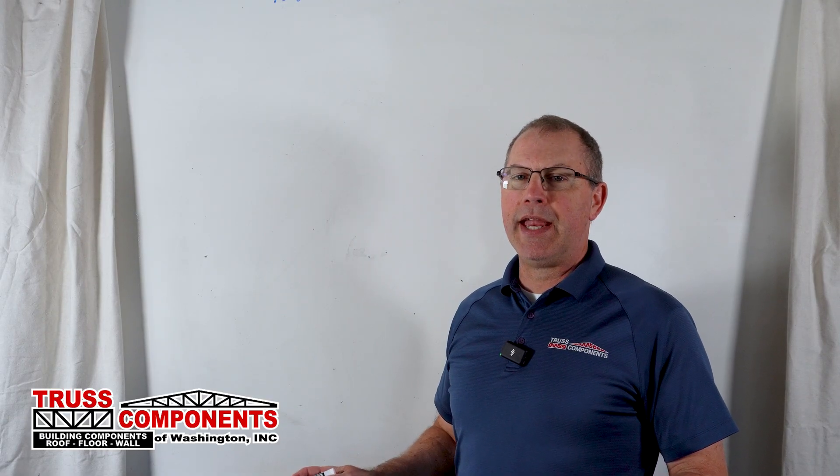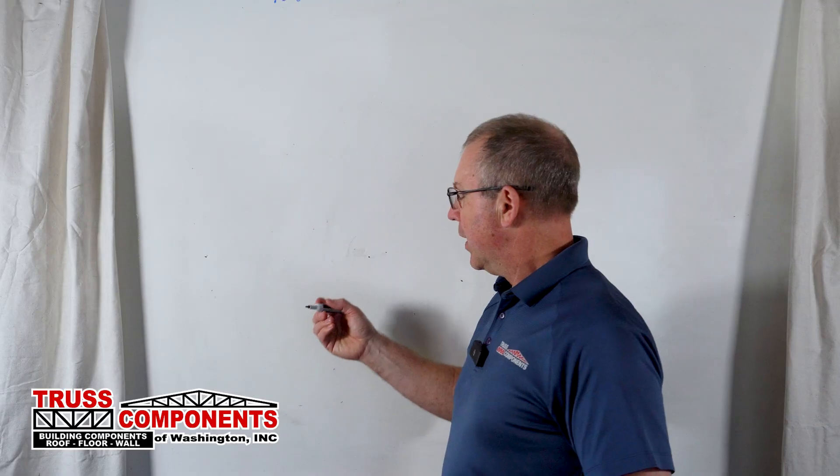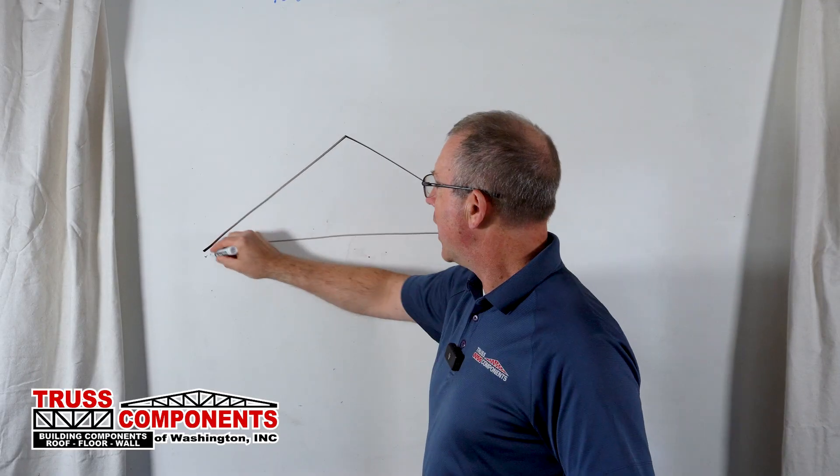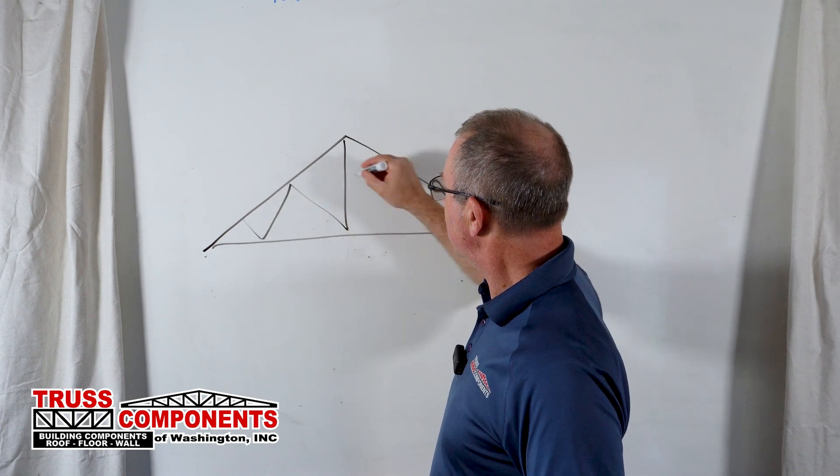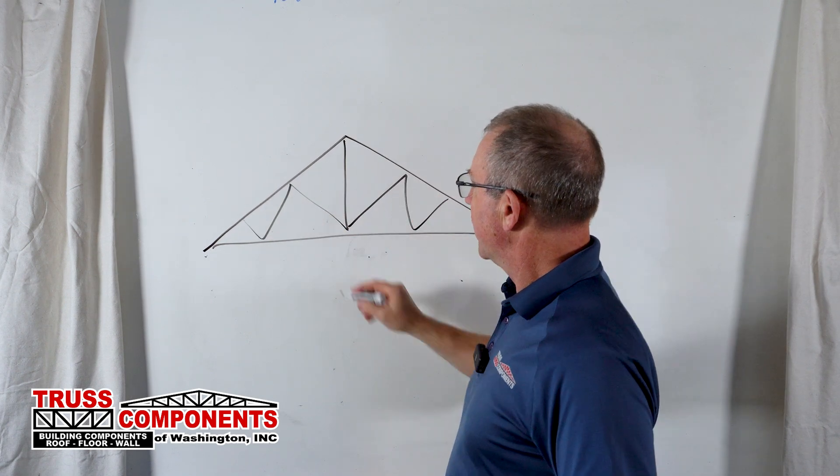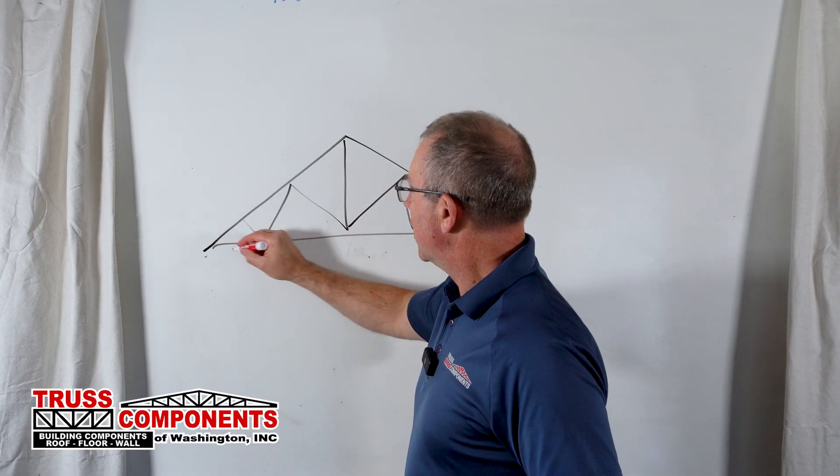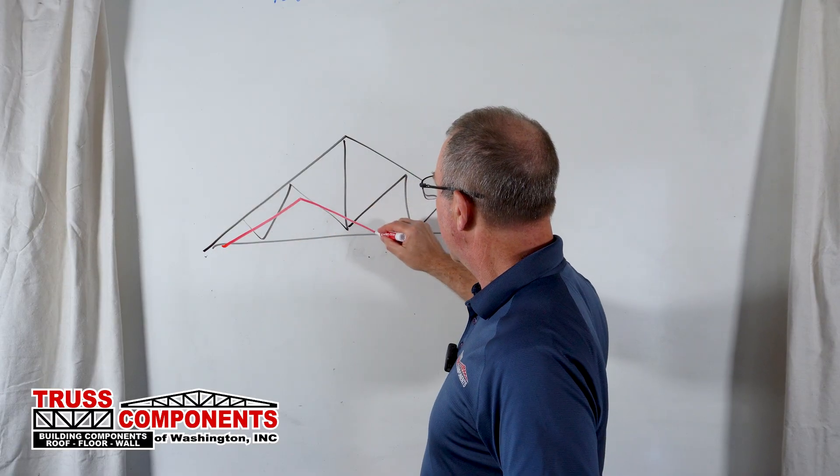Let's take, for instance, a truss where we thought we should have a vault, but it came out flat. So sometimes it makes the most sense to replace trusses, but that is typically not the case. Usually a modification could be made on site with the trusses that you have. For the instance of, let's say, a flat truss where we want a vault, the engineer can come up with a solution to put a vault in that truss.